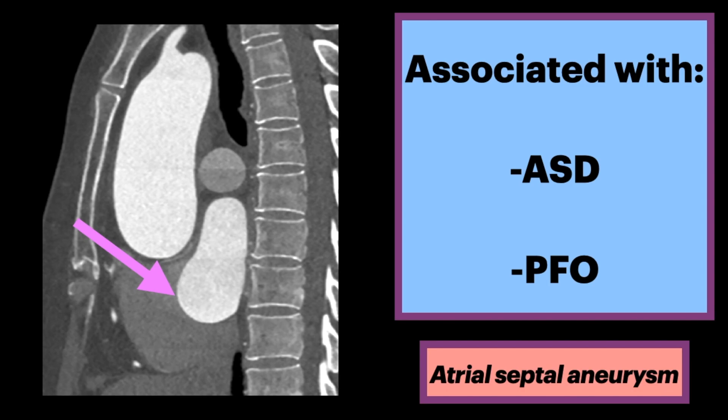A PFO, patent foramen ovale, is a lack of fusion of the fossa ovalis in the interatrial septum primum and secundum, allowing blood to go from the right to left chambers, and could be a cause for a stroke.